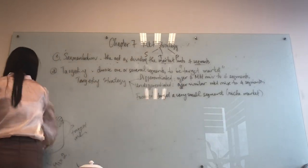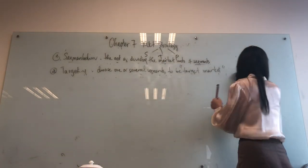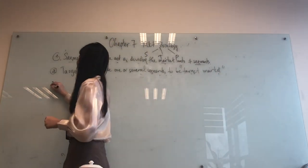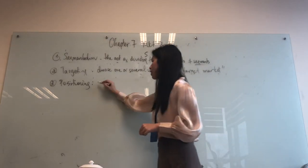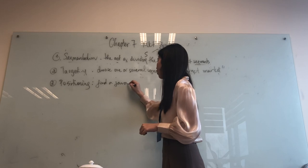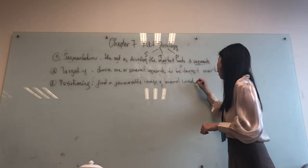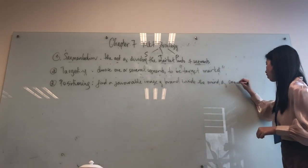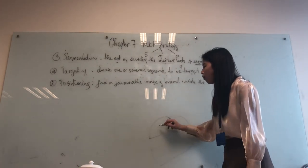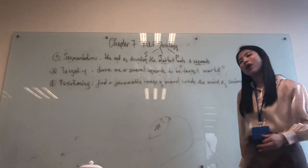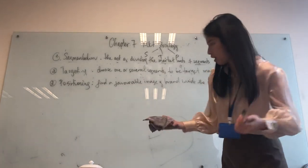Now let's move on to the last part: number three — Positioning. Positioning is finding a favorable image of your brand inside the mind of your customers. You have your target market — but what do you want this group to think of you? This is called brand perception, or product positioning.